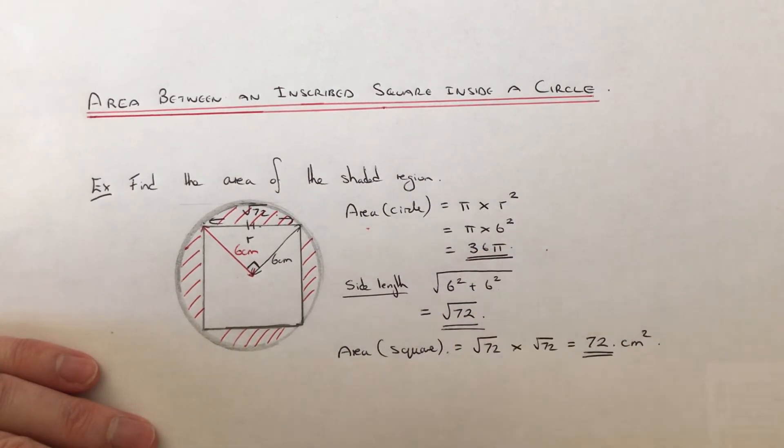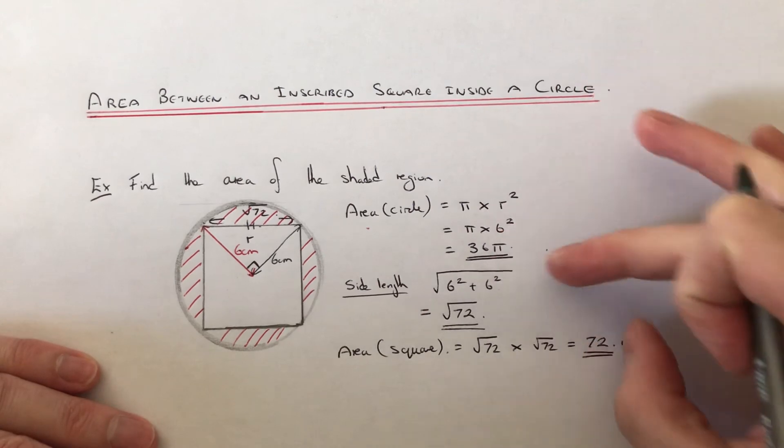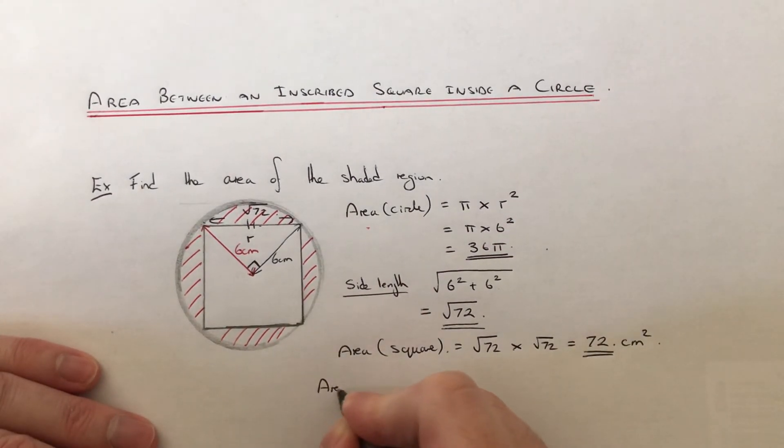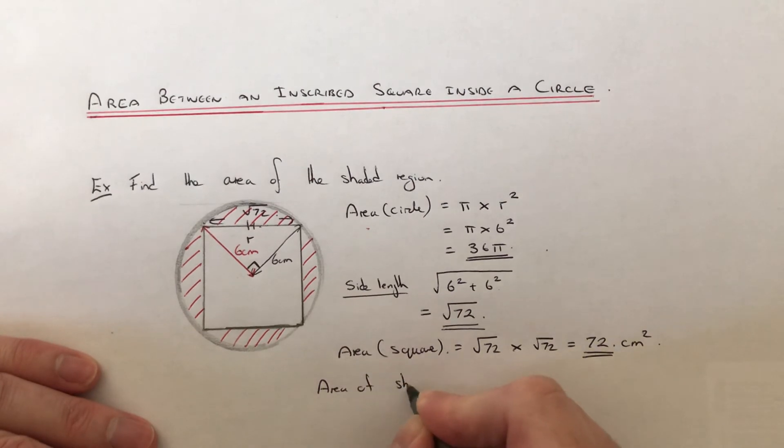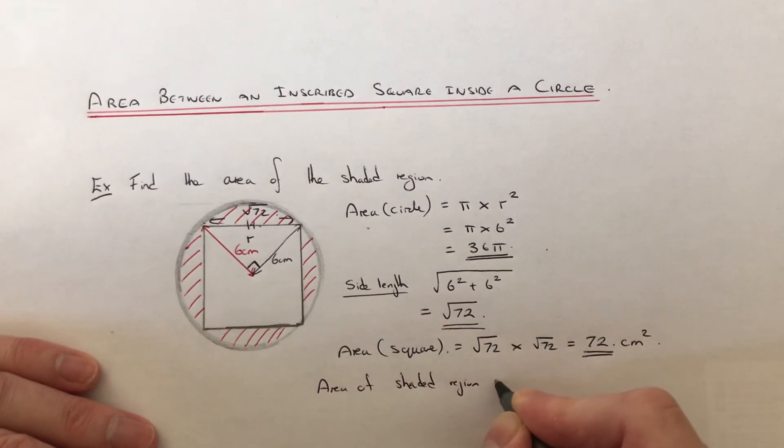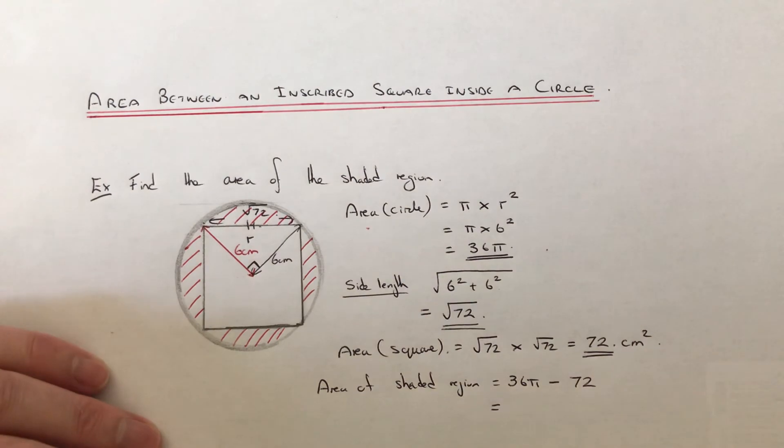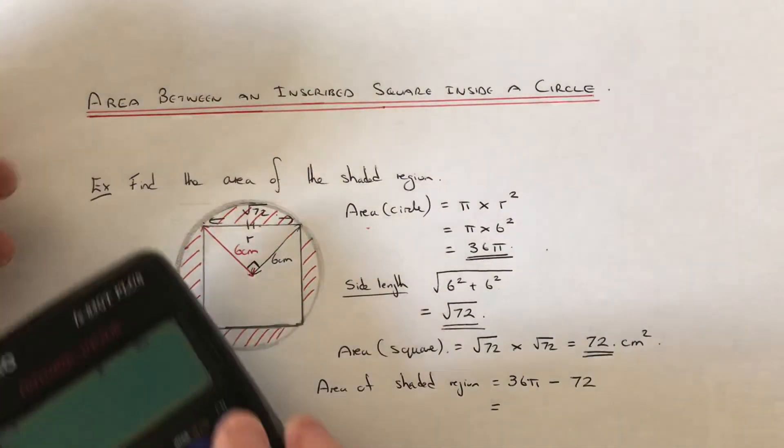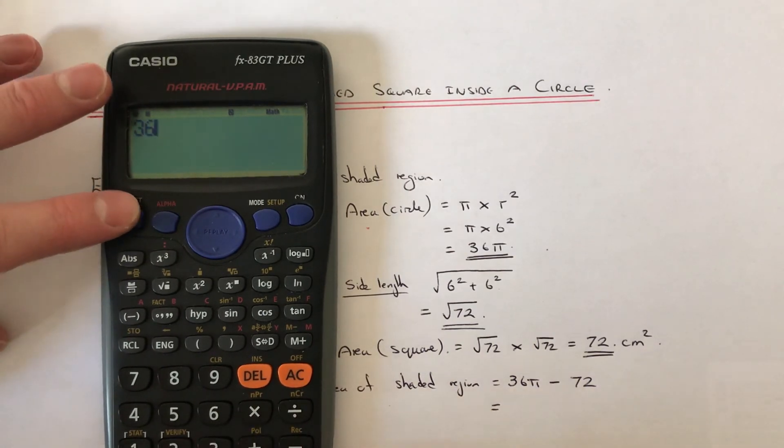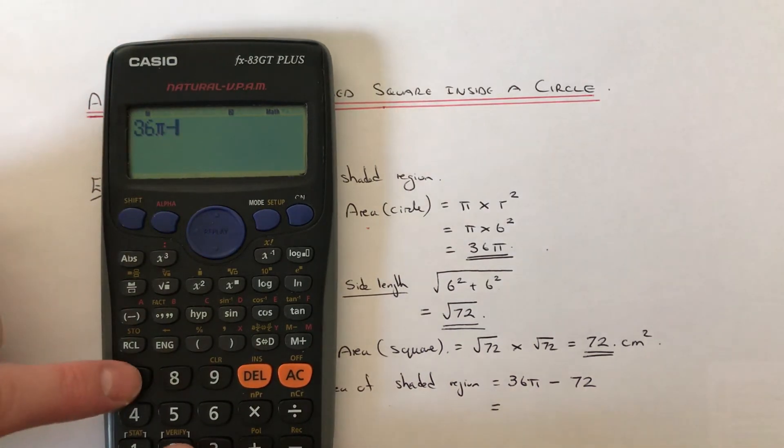We've now got the area of the square and we've got the area of the circle, so we just need to work out the difference between those two answers. So we do 36 pi take away 72. Let me get our calculator now. So 36 shift pi take away 72.